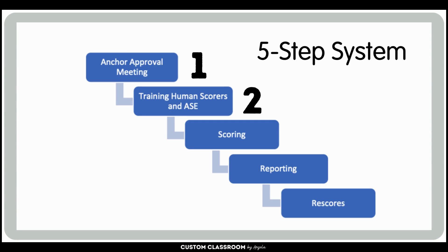Next, step two, there was training for human scorers and the new ASE system. Human scorers and the automated scoring engine were trained using TEA-approved student responses. The scorers go through a process of studying the anchor responses, practicing scoring, and demonstrating understanding through qualification sets. The ASE is trained to emulate human scoring based on the field test data.